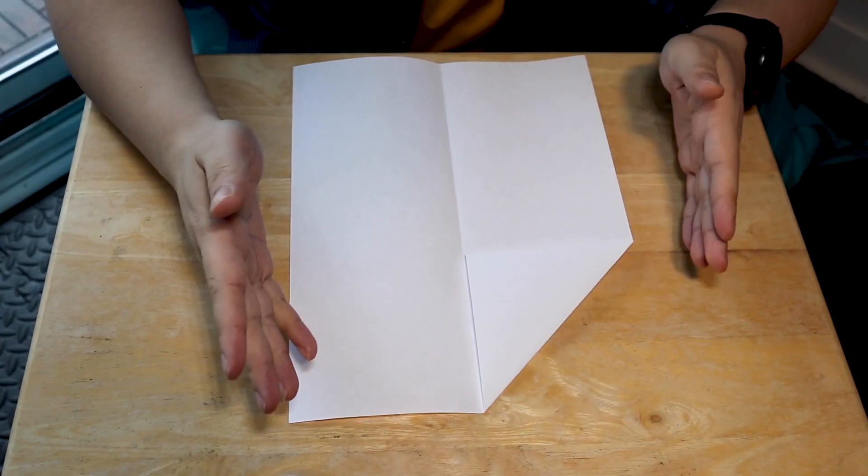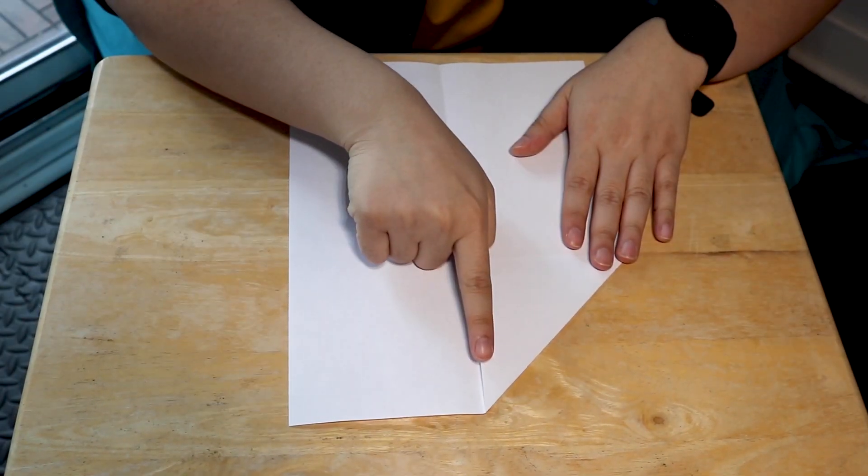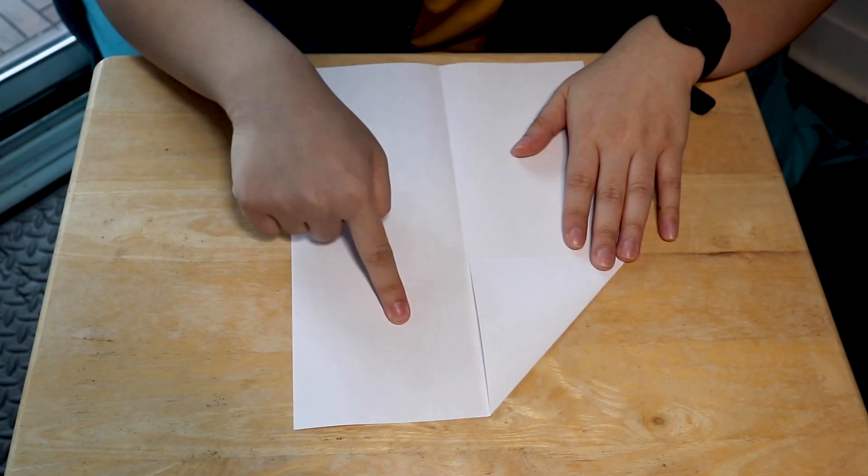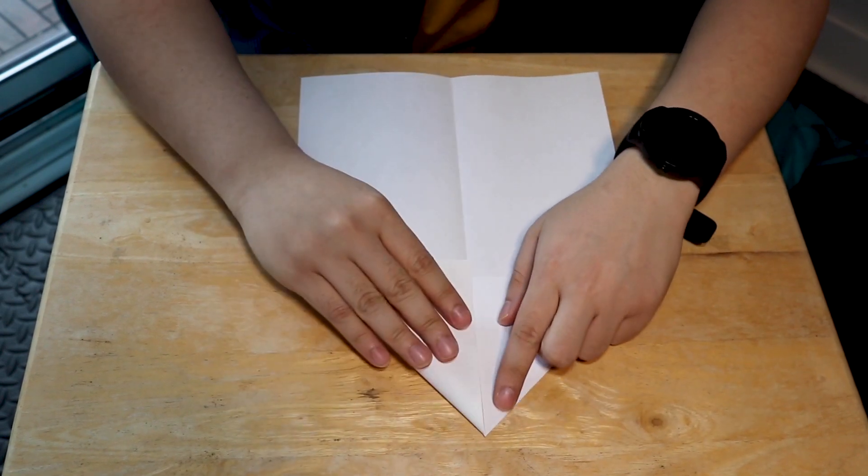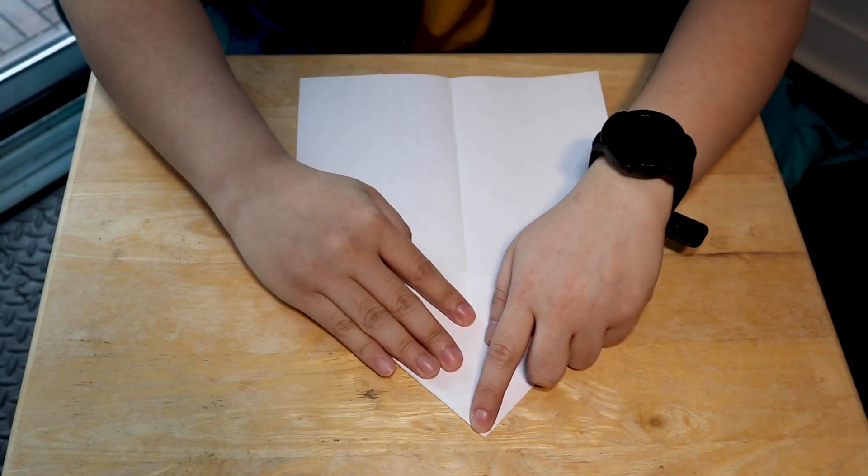Can you guys guess where the tip of the airplane is? That's the tip right there. So we're gonna make this on this side. So we're gonna fold this corner right over here and we're gonna let it meet the crease in the middle.